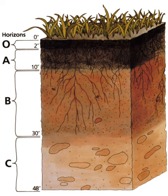Micropores are pores sufficiently small that water within them is considered immobile, but available for plant extraction. Because there is little movement of water in these pores, solute movement is mainly by the process of diffusion. Size: 5 to 30 micrometers.